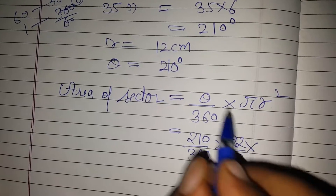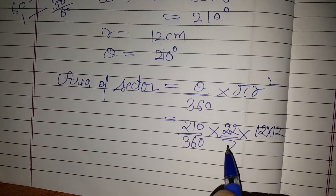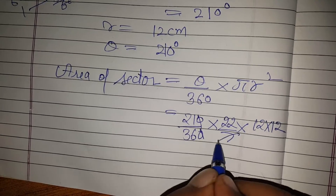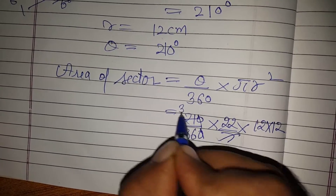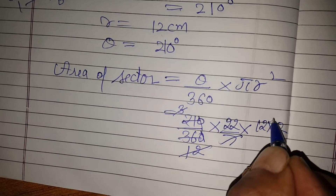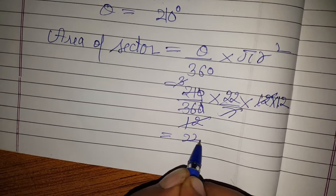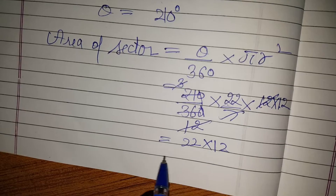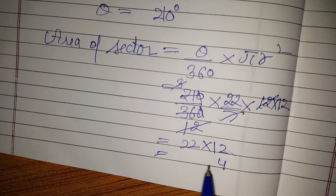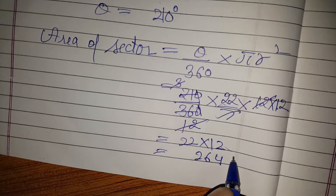With r equals 12 cm, we substitute: 210 by 360 into pi into 12 into 12. After cancellation, we get the area of the sector swept by the minute hand in square centimeters.